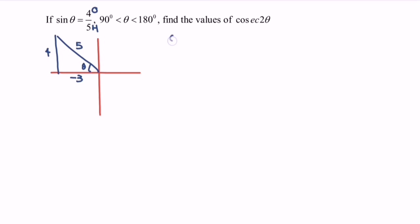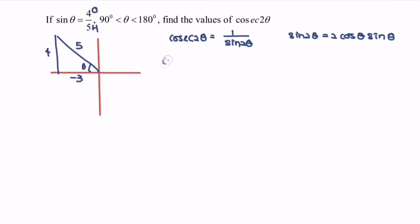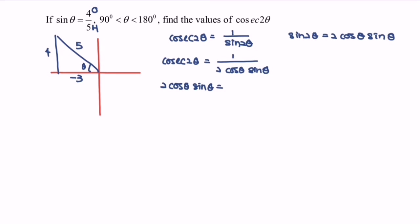Now we focus on csc 2θ, which equals 1 over sin 2θ. Based on the double angle identity, sin 2θ equals 2 cos θ · sin θ. Substituting, csc 2θ equals 1 over 2 cos θ · sin θ. We substitute cos θ equals negative 3 over 5, multiplied with sin θ equals 4 over 5. Simplifying, we get negative 24 over 25.